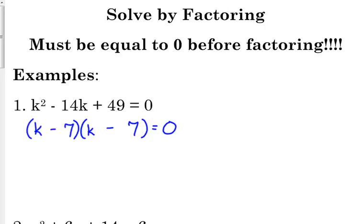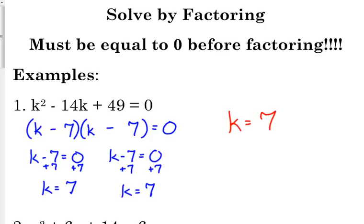So, in order for (k-7) times (k-7) to be equal to zero, one or both of those have to be zero. So that's why after this point, we set them equal to zero, and we solve for the variable. Now, obviously, both of these are going to give us the same answer. We add 7 to both sides to get k by itself. So we get that k is equal to 7. So our solution is k equals 7.